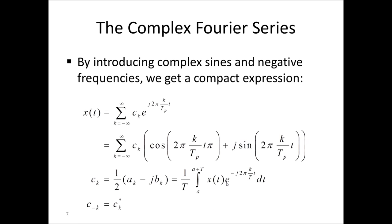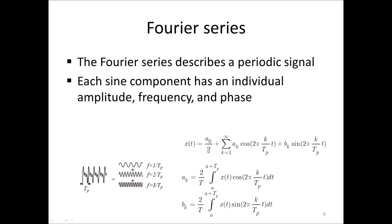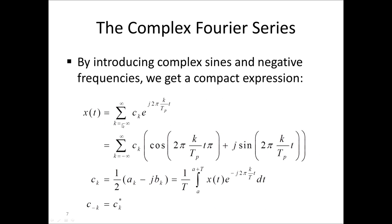Now, we can also use another form of the Fourier series, the complex Fourier series. We then have that the periodic signal x of t is written as a sum from minus infinity to infinity. The previous sum was from one to infinity, because we only had positive frequencies. Now we changed, for the complex Fourier series, we changed the sum to go from minus infinity to plus infinity.